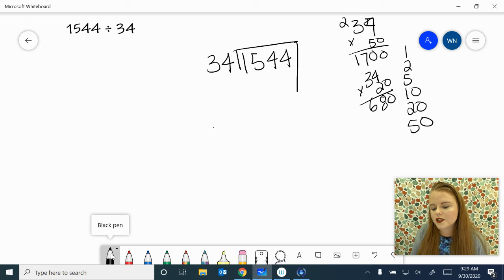Remember, we're going to pull this long line down. Let's go ahead and work. Our friendly number is 20. That's 680 because 34 times 20 is 680.